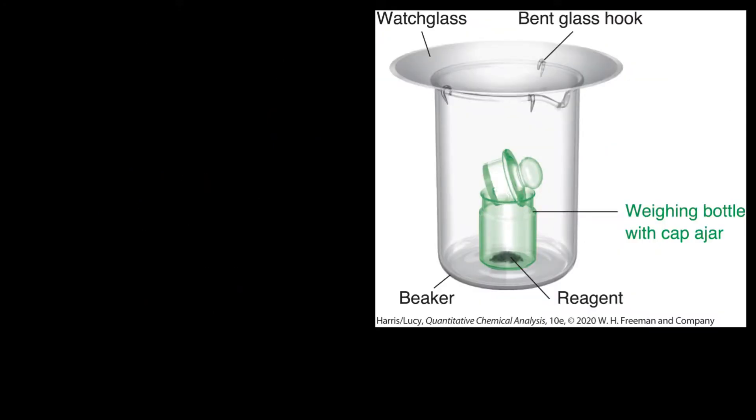In order to dry and weigh our samples in the lab, it's common to place them in a previously weighed weighing bottle. A weighing bottle is simply a glass vial that has a tight-fitting lid on it. We can dry our sample in a weighing bottle by placing it inside of a beaker.